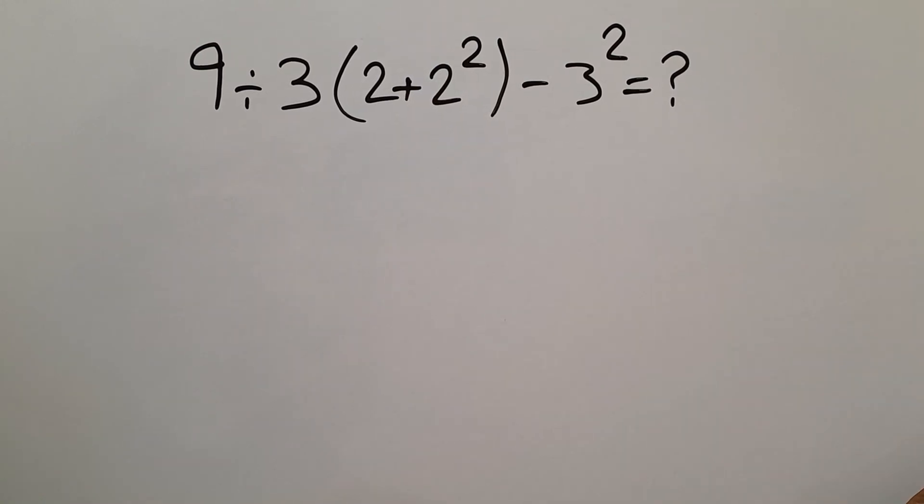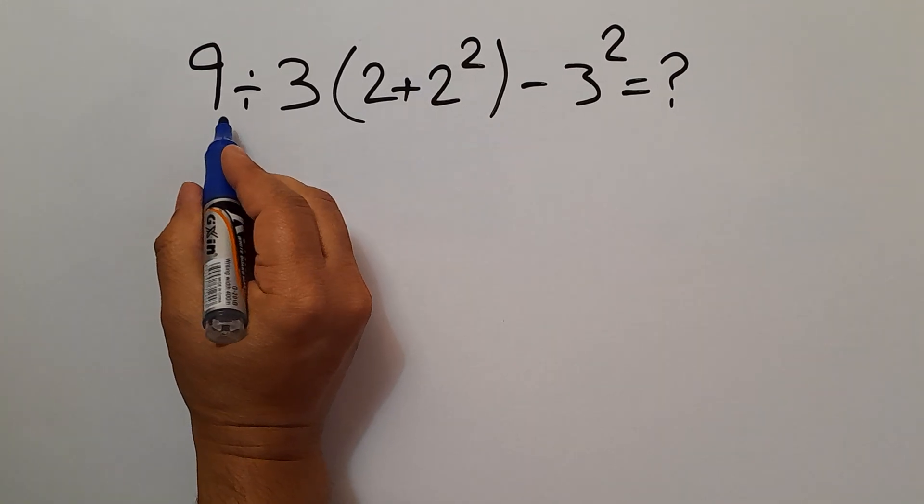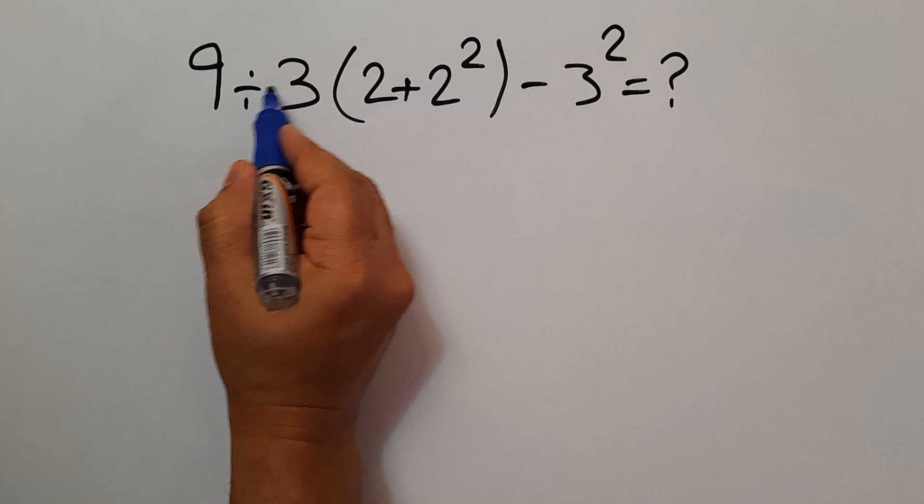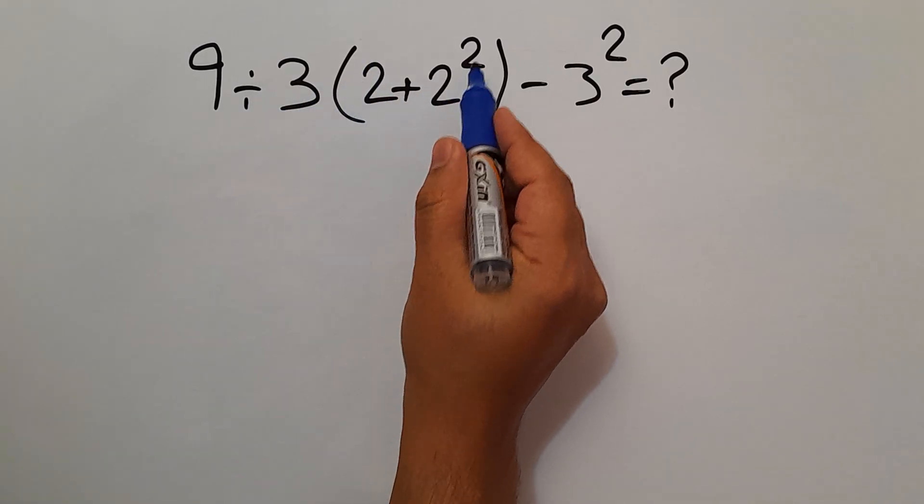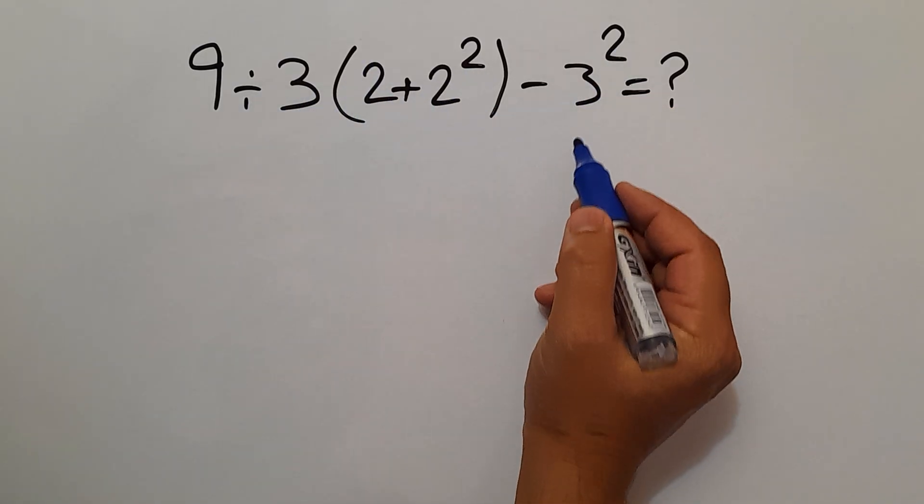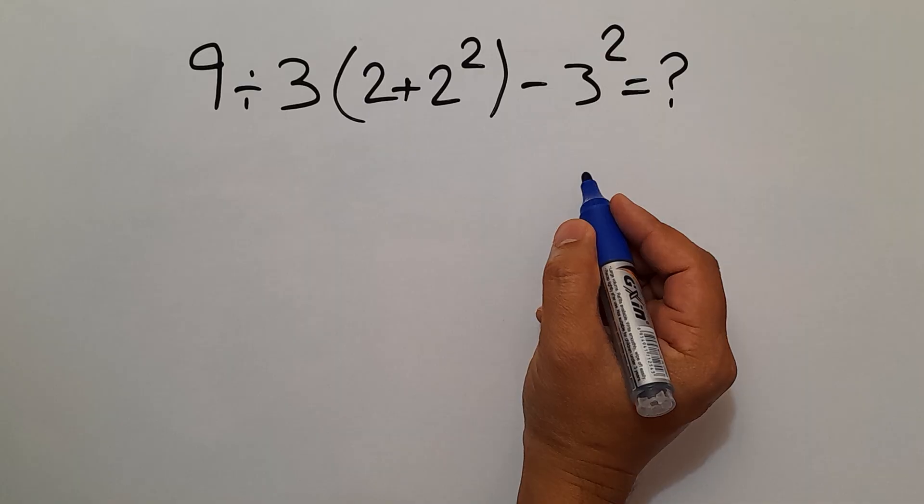Hi everyone and welcome to this video. In this video we want to find the value of this expression: 9 divided by 3 times 2 plus 2 squared minus 3 squared. Are you ready to solve? Let's go ahead and get started.